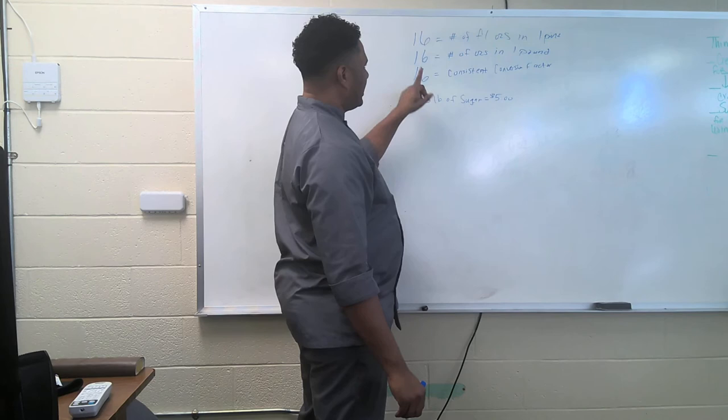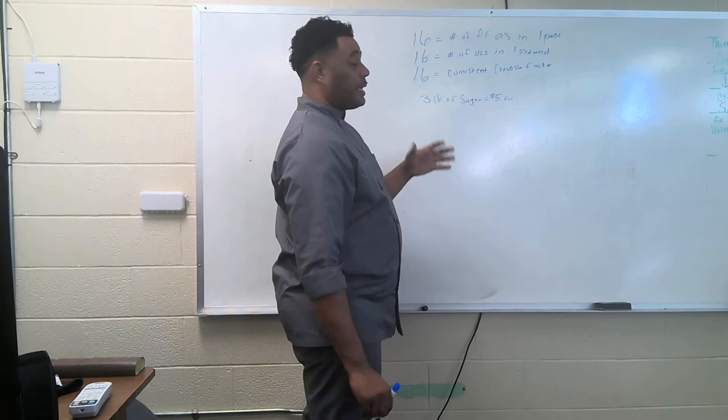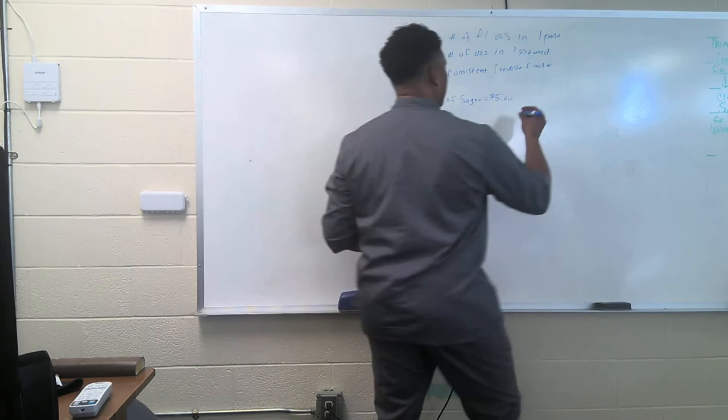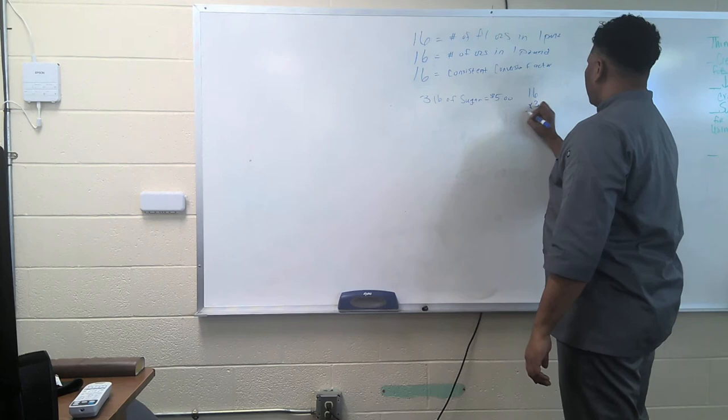We already know that it takes 16 ounces to make one pound as we stated in the aforementioned. So how do we find out how many ounces are in a three pound bag of sugar? We simply take the amount of ounces in one pound, and that's 16. We multiply it times the number of pounds, so that gives us three.